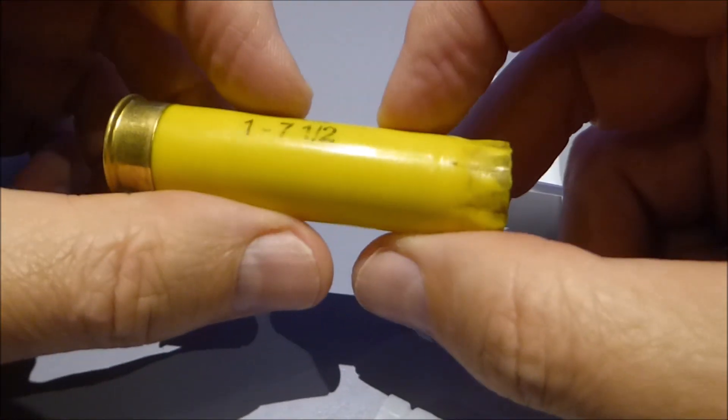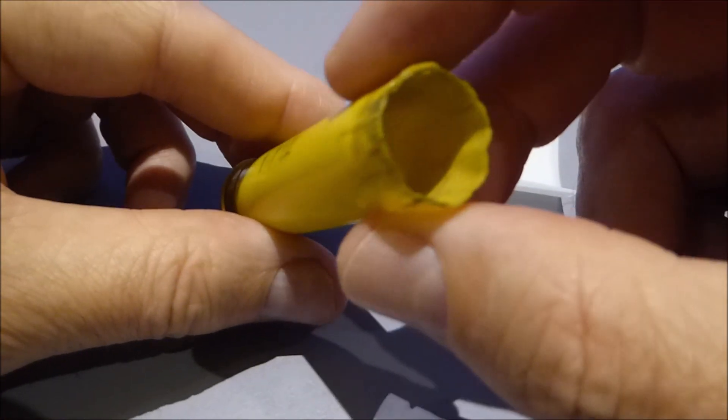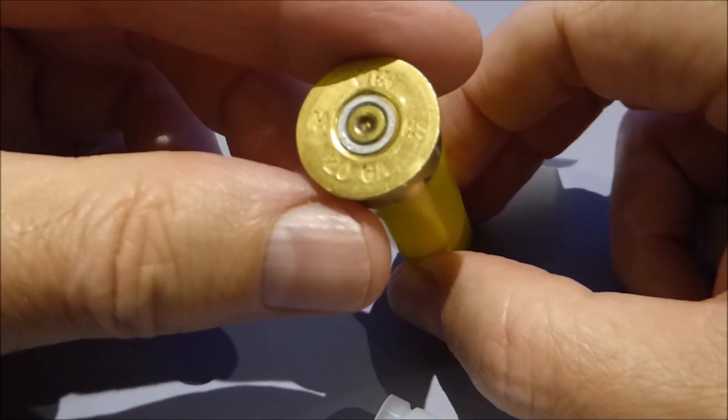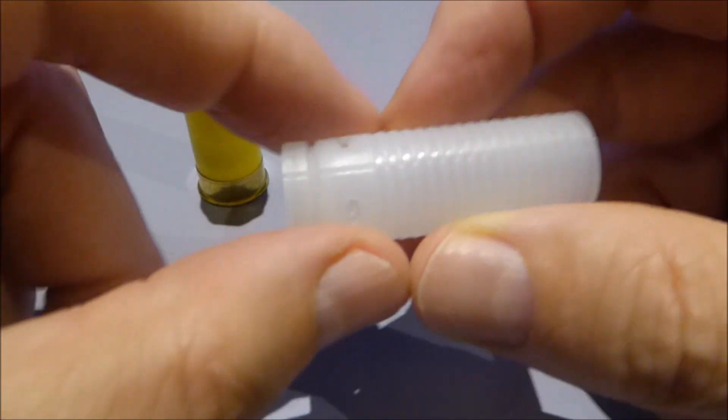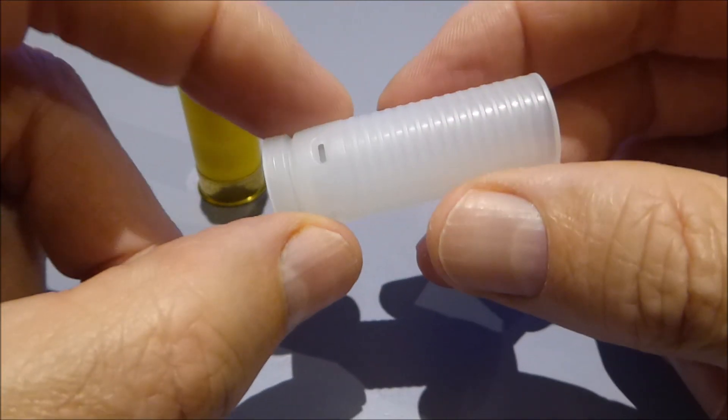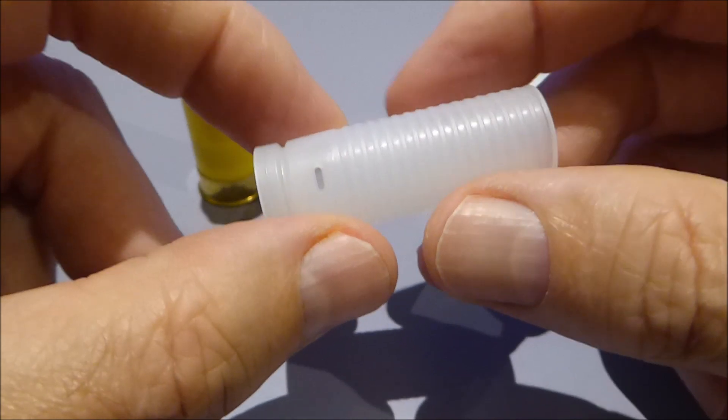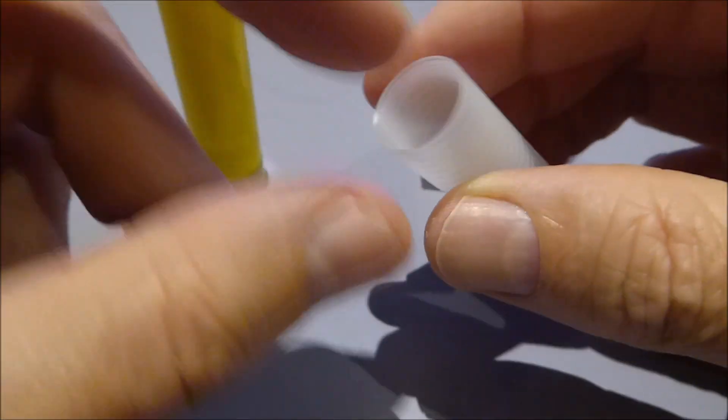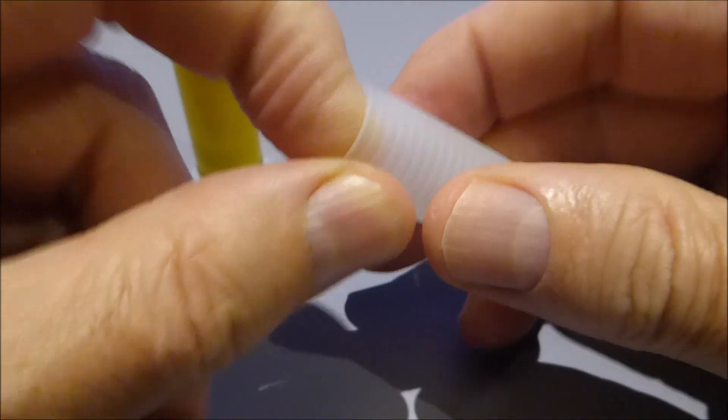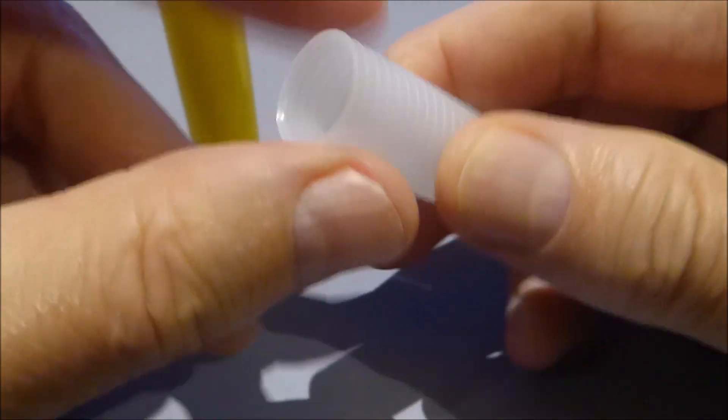So before firing I have a wad that looks like this. Deprime it, put a new primer in there. This is the ballistic products TPS, they're designed for tungsten super shot and steel shot. Very very strong thick wad, it's not slick.